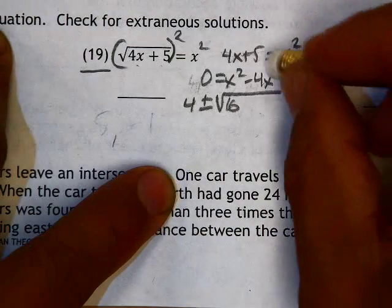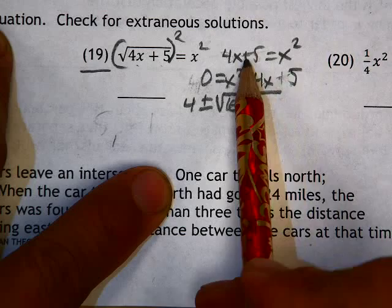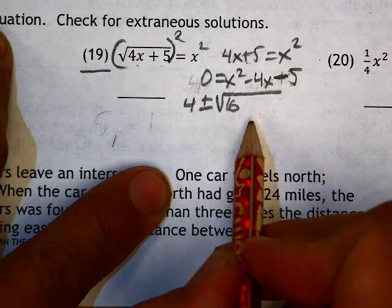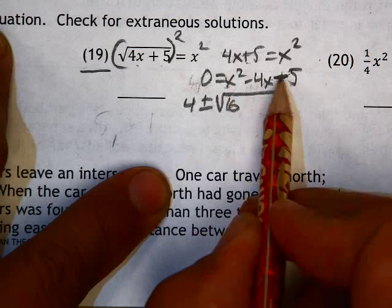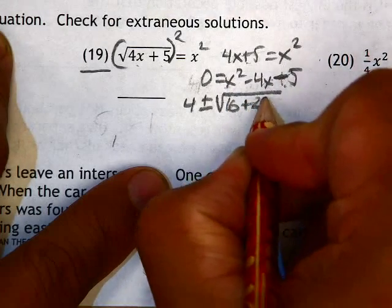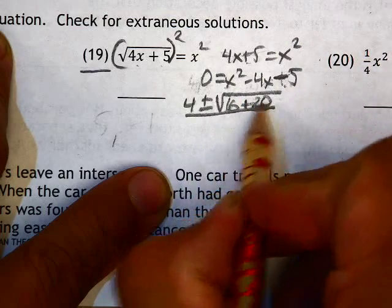Oops, that's a negative 5, sorry. When the positive 5 is moved to this side over here, it becomes negative. So negative 4ac, negative 4 times negative 5 gives me plus 20, all over 2a.